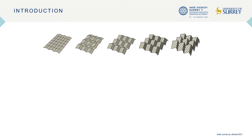First, I want to talk about folded sandwich cores in general. These fold cores are created by folding a flat sheet of material into a three-dimensional structure, like you can see on the top. The fold pattern used here is a typical Miura-Ori fold. This fold core can then be placed between two face sheets to create a sandwich composite.